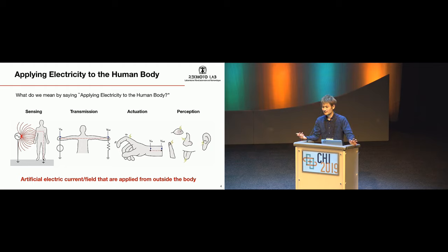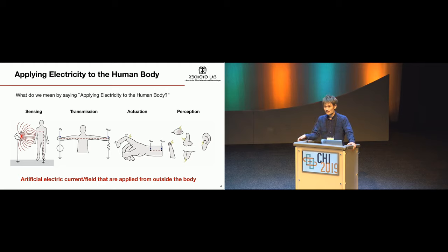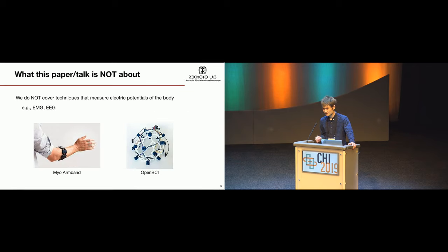By saying 'applying electricity to the human body,' I don't just mean electrical stimulation. We actually cover other kinds of electric signals, like imperceptible things such as body area transmission. It's essentially where an artificial electric current or field is applied from outside the body to inside the body. We do not cover techniques that measure electric potentials from the body, like EMG or EEG.